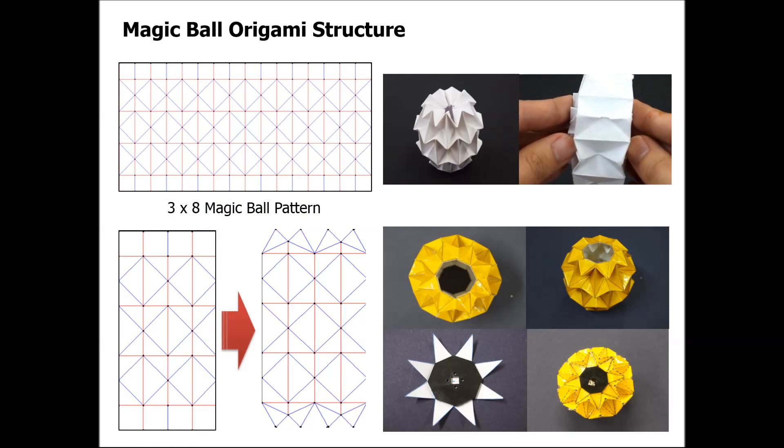The origami pattern for the wheel was made by using one of the most famous origami patterns, the magic ball pattern. To make a wheel with this pattern, additional spoke design was used.